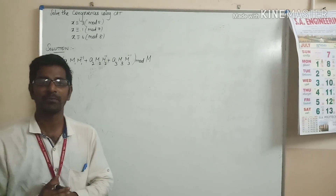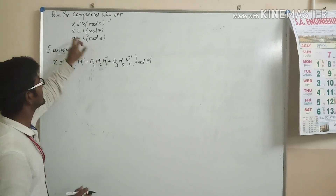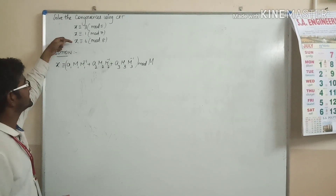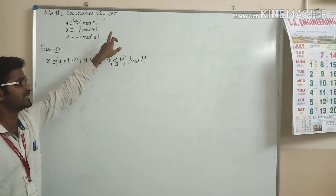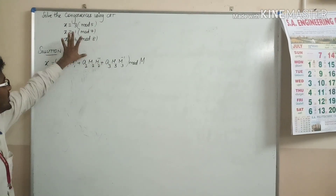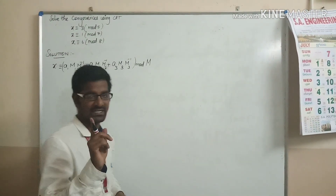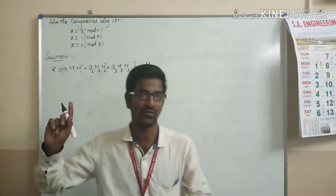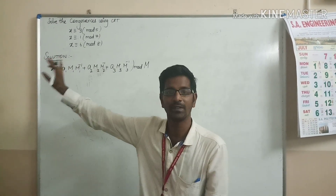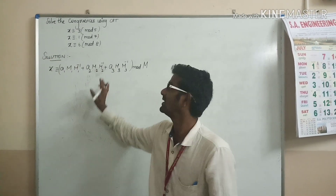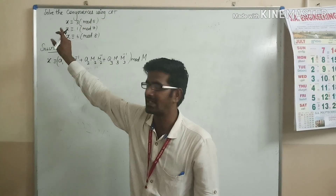We will see example number 2 for solving the set of congruence equations using the Chinese Remainder Theorem. Before solving this, as I already mentioned, only one condition we have to check for. And if that condition is satisfied, then we can solve the given congruences using CRT.